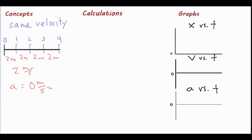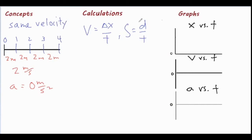Moving on to the calculations, these are going to be solved with one of two formulas. You have velocity equals delta x over t, which is displacement over time, or speed equals distance over time — both of which look pretty similar. Velocity has vectors, so it can come out positive or negative, while speed is strictly the magnitude, giving you only positive numbers of how fast the object is moving, how far it's going, and how long it takes.